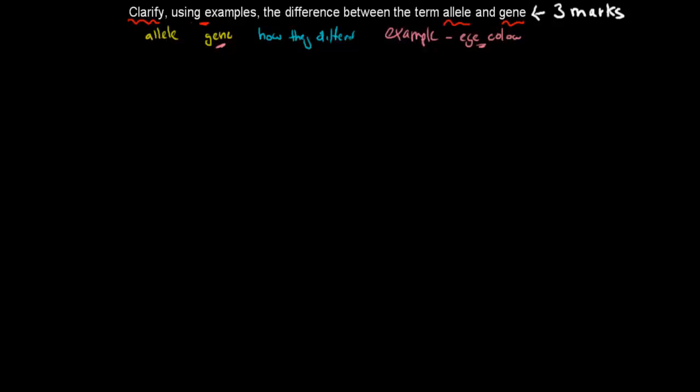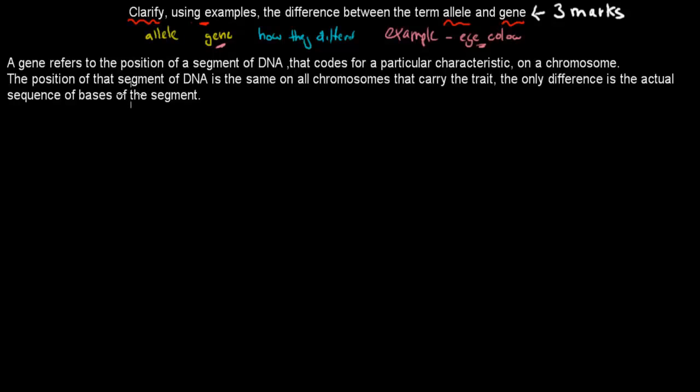So first what I wrote was, I'll go through what a gene was. And if this definition or this description sounds a bit confusing, don't worry about it. I'll go through a diagram as well at the end. It's actually always good to, especially for this kind of question, to maybe put in a quick diagram, because that might help you to show the marker that you know what you're talking about. So in this case I'm going to go through a diagram as well. But first I'll describe what a gene was. So I say a gene refers to a position of a segment of DNA. So it's a segment of DNA that codes for a particular characteristic on a chromosome.